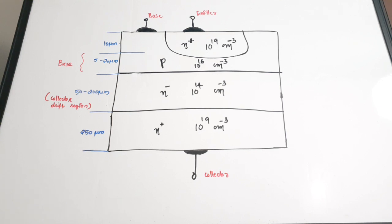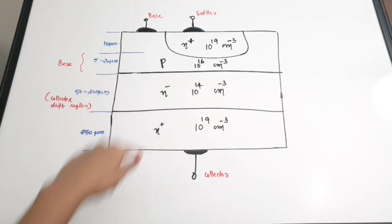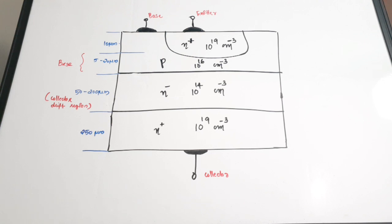Just like a normal transistor, here also there are three terminals: base, emitter, and collector. We have seen from which layers each terminal is taken. Power BJTs are generally used in the common emitter mode. In common emitter mode, the base is taken as the input and the collector is taken as the output terminal, and the emitter is common to both the base and the collector. The N- drift layer is very important as it determines the breakdown voltage of the transistor.